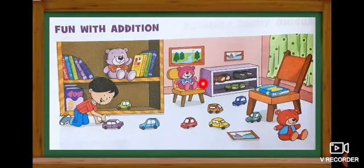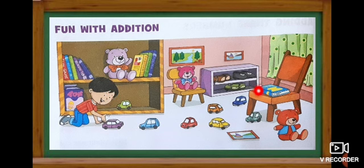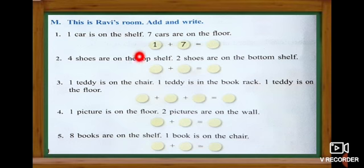Now we are going to learn fun with addition. Look at here — who is he? He's a boy playing with a toy car. Some dolls are here, and a rat with shoe, and a chair. This is his room. Some books are here. The name of this boy is Ravi. This is Ravi's room. Add and write — now we are going to add and write the things in his room.